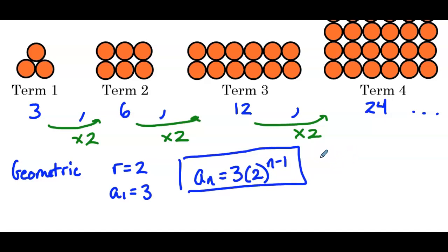The key with an illustrated sequence is to write out the numbers being represented — in this case, the orange circles — and then work from the numeric sequence. We looked at a bunch of word problems using both the arithmetic and geometric explicit formulas and plugged in to answer the question, and finished with an illustrated sequence that we wrote out numerically and created the formula for.